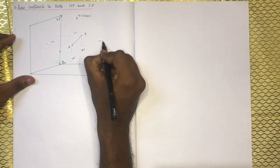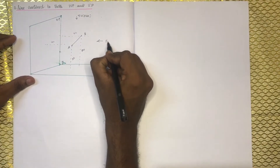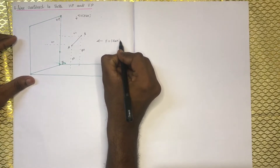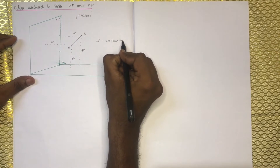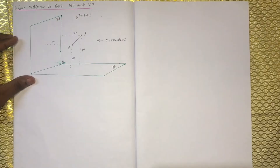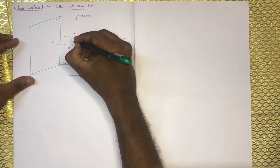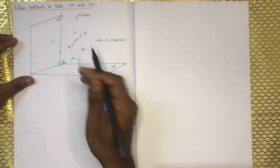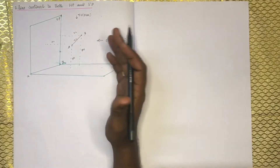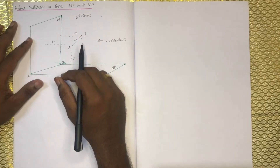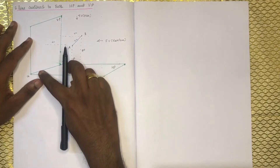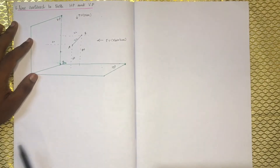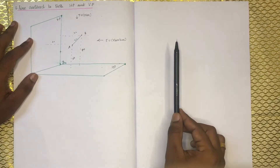First is the front view — that is the elevation. Then the plan. It is not the actual length; the line is inclined to both planes. The plane is parallel, and there is a projection.